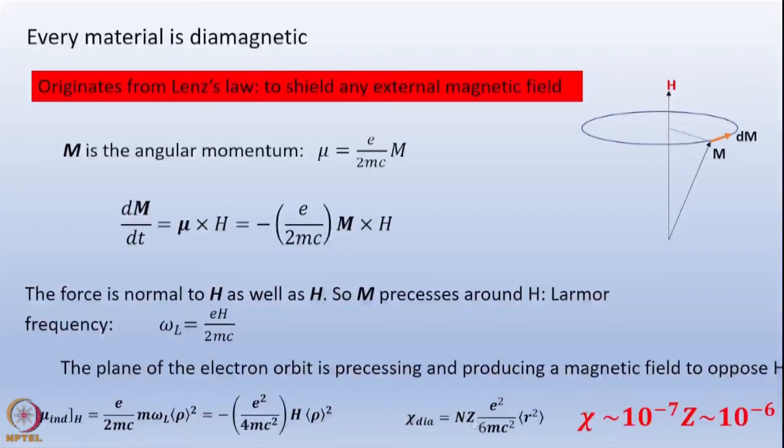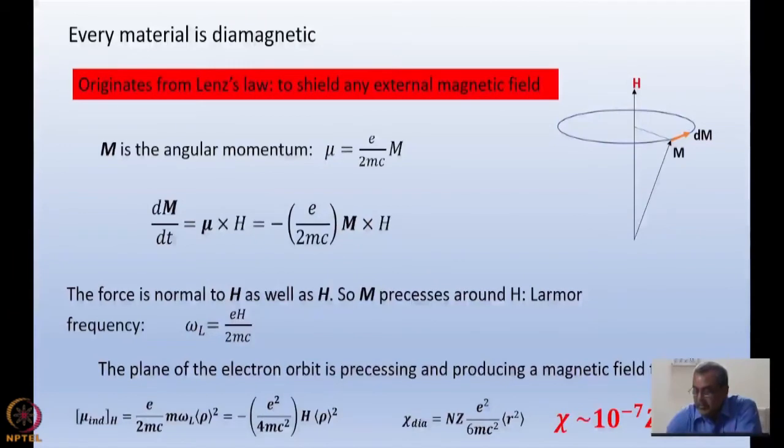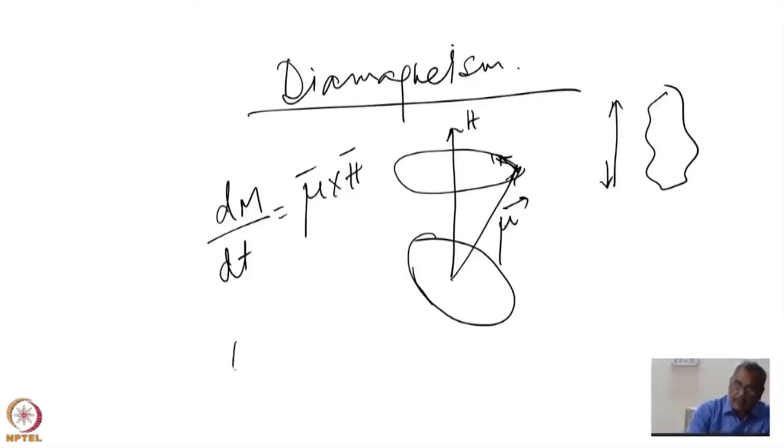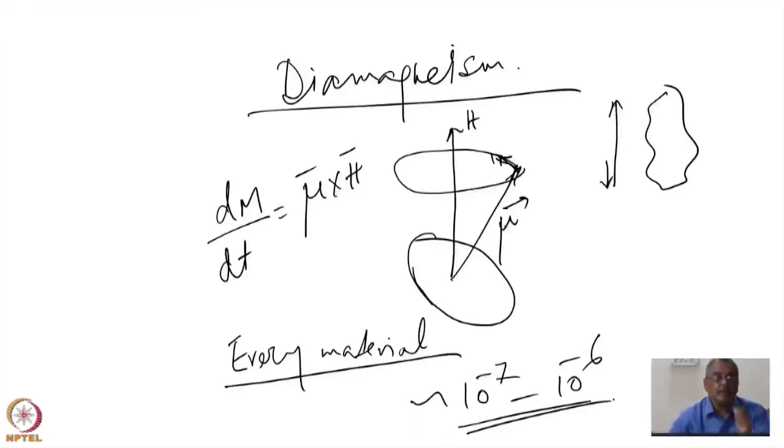This rho square is the average radius of an orbit. We can take average radius of all the orbits. This comes typically as average value of R square multiplied by Z value, number of electrons in the orbits. The Z value of the material multiplied by N, and then E square by 6MC square is the pre-factor coming from the expression. This gives the susceptibility of a diamagnet, and if you evaluate it, it has got a very low value: about 10 to the power minus 7 Z, which is around 10 to the power minus 6 if I multiply it with the value of Z. That means every material has a susceptibility of the order of 10 to the power minus 7 to 10 to the power minus 6, depending on the number of electrons in its orbits which opposes a magnetic field.